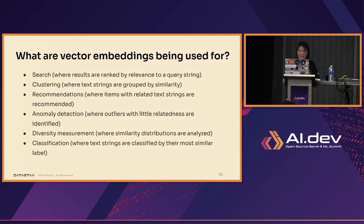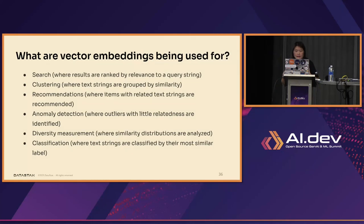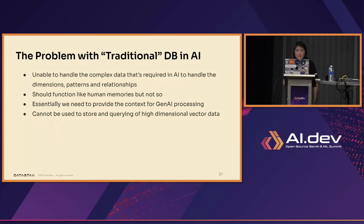Vector embeddings — what are they being used for? Besides vector searches, you can use them for clustering, recommendations like shopping product recommendations, multidimensional searches, anomaly detection, diversity measurement, and classification of data. You can still use a traditional database, but you'll realize it just cannot handle the complex data types required for machine learning searches, so it's just not a good idea.